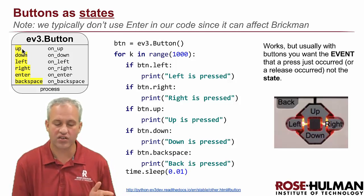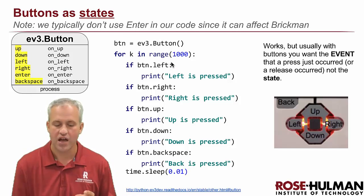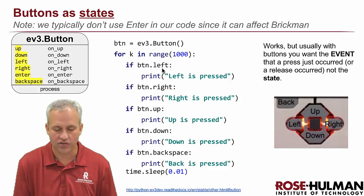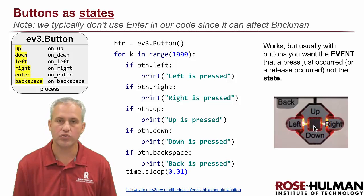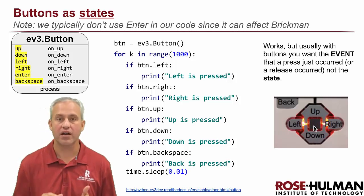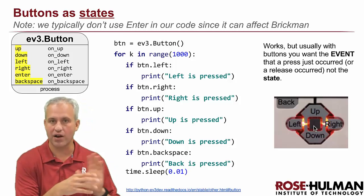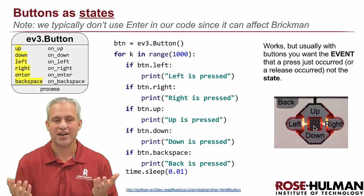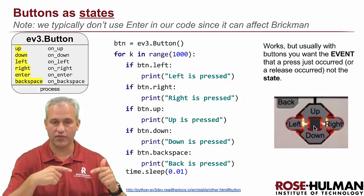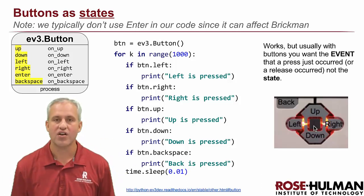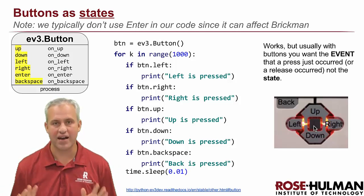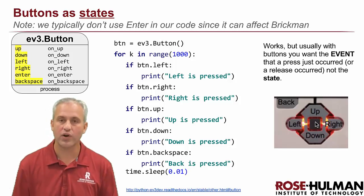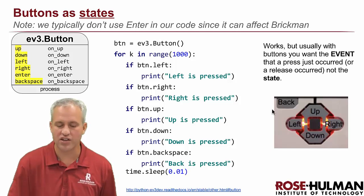Using buttons as states is straightforward — there's an instance variable called `up`, `down`, `left`, `right`, `enter`, and `backspace` that just tells you true or false. You'll notice the example left out `enter` — that's because we rarely use the enter button. By default, the Brickman program runs at the same time as your program and receives the button events too. As long as you never hit enter, nothing bad happens to Brickman, so that's why we never use enter.